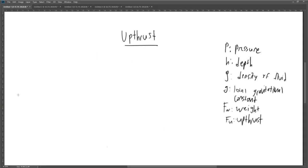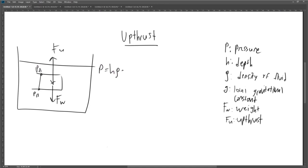Upthrust is defined as the force opposing the weight of an object that acts on that object when it is either partially or fully submerged in a fluid. This phenomenon occurs due to the way pressure varies with height. At greater depths of a fluid, the pressure of the fluid is much higher. This idea of pressure increasing as the depth of a fluid increases is reflected in the formula: pressure equals depth times the density of the fluid times the local gravitational constant.